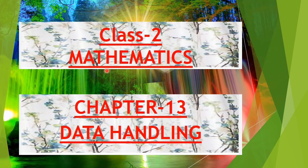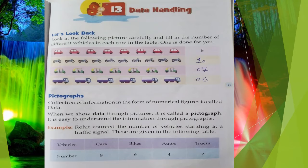Good morning class. This is your maths book and we have started Chapter 13, Data Handling. Yesterday you understood about data handling — how to make or prepare any data. Whenever we have any information or we have to prepare a record with the help of data or pictograph: when we make a record with the help of numbers or numerical figures, it is called data. When we maintain a record with the help of pictures, it is called a pictograph.